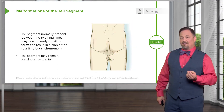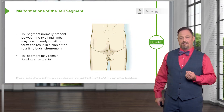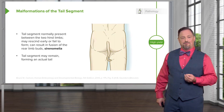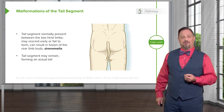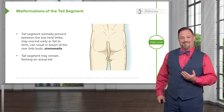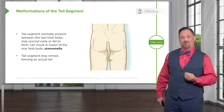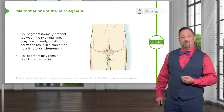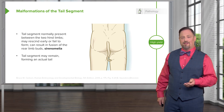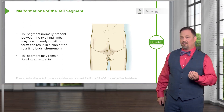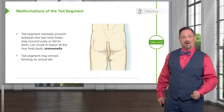On the other extreme, occasionally the tail segment can remain and people can be born with short, non-functional tails. They tend to be relatively floppy and not prehensile. A vestigial tail is a remnant of the tail segment that should have receded but did not.